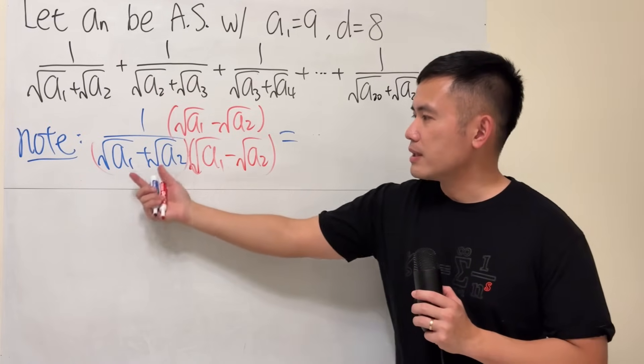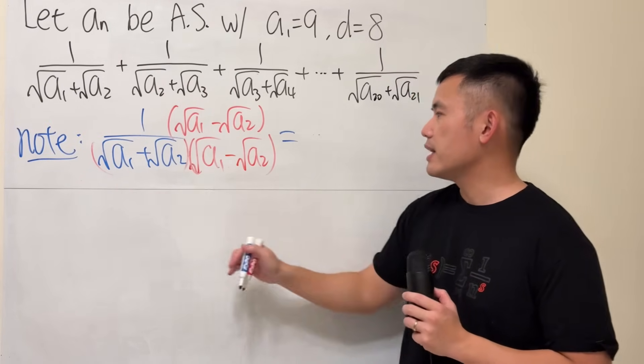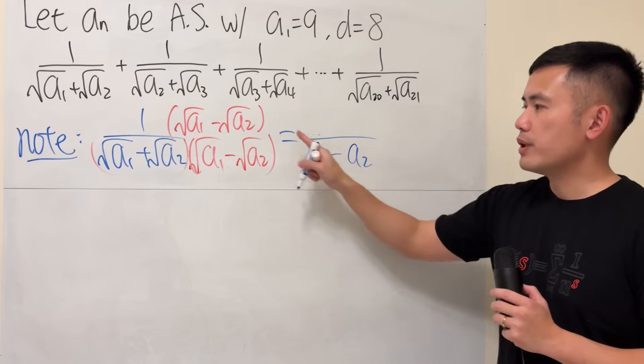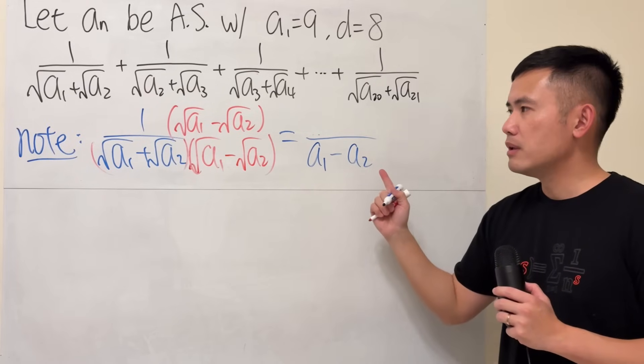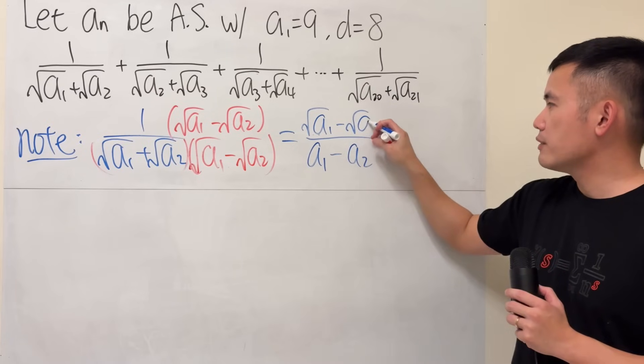Then, for the bottom, we just have to square the first and then minus square the second, so we just have a1 minus a2, square root cancel, so that's what we have. And the top is still that, square root of a1 minus square root of a2.